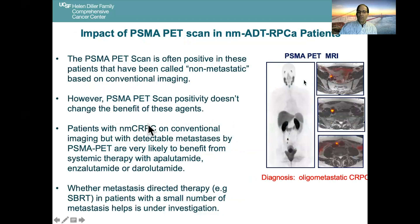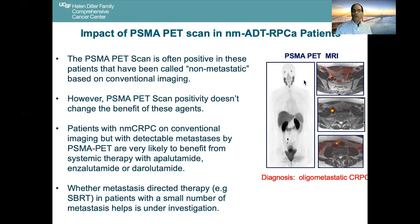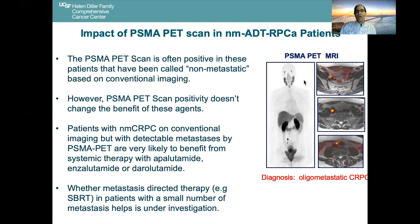The last thing to discuss is what happens when we do a PSMA PET in these patients. Here's an example: a patient with a normal CAT scan and normal bone scan who now on PSMA PET scan has a small number of metastases — one, two, three spots lighting up. It turns out a PSMA PET scan is frequently positive in one location or another in patients previously called non-metastatic based on conventional imaging alone.